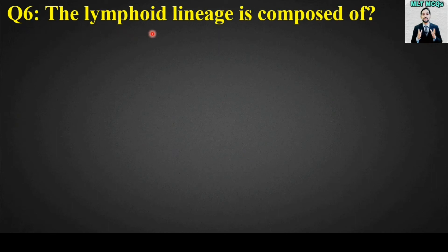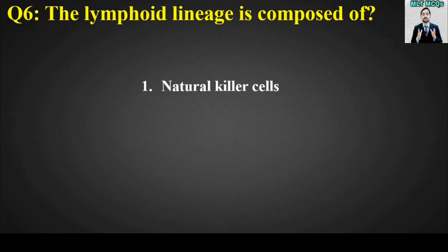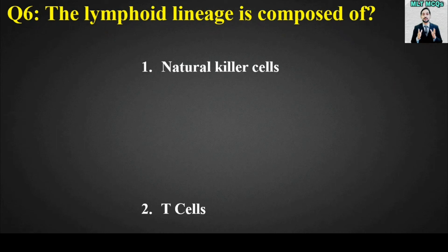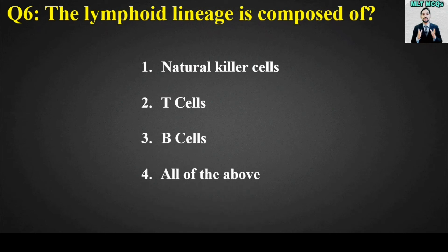MCQ number six: the lymphoid lineage is composed of — options are natural killer cells, T cells, B cells, or all of the above. The right answer is option number four, all of the above. The lymphoid lineage is composed of natural killer cells, T cells, as well as B cells.